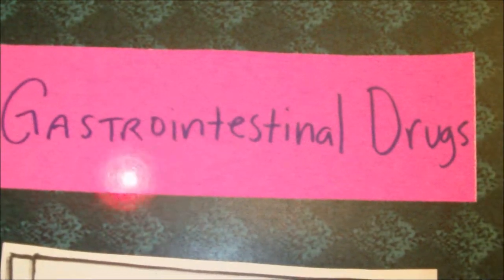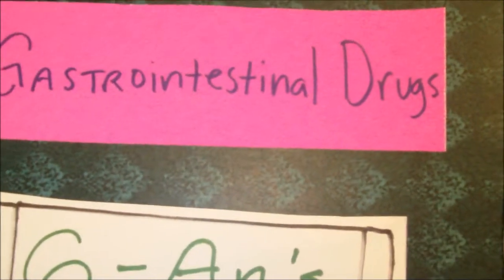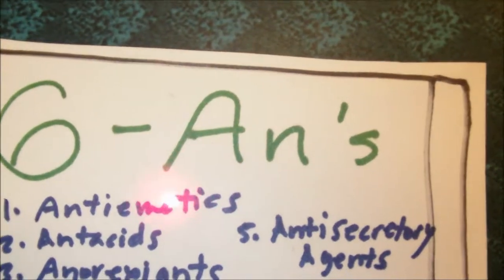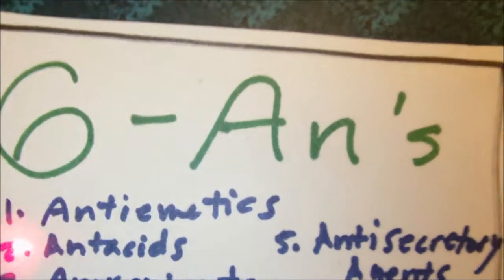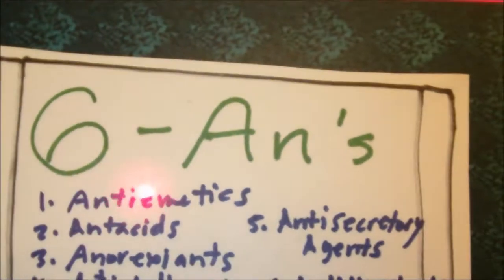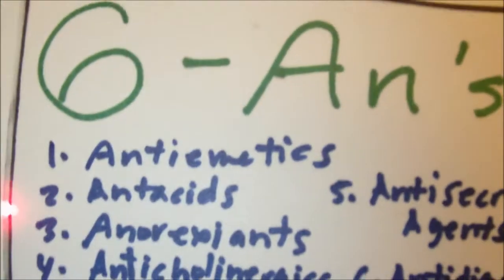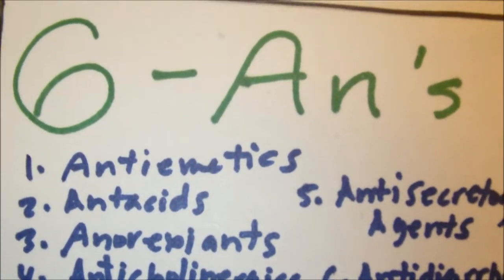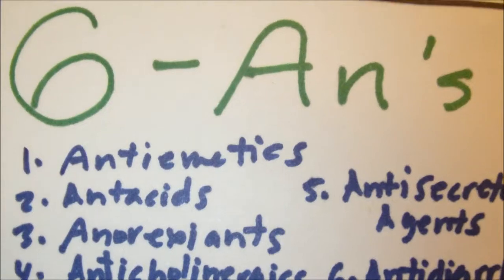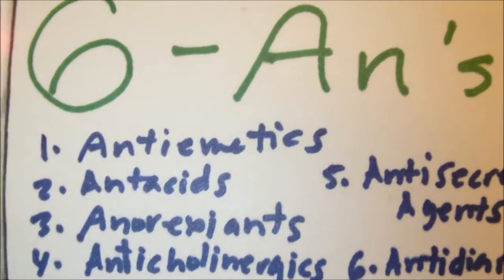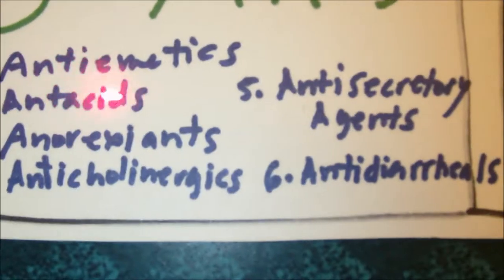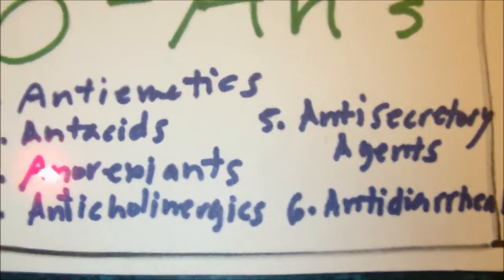With that in mind, I came up with the acronym of 6 ANs, which basically describes the first two letters — AN — of the major drugs we need to focus on in this system. Those groups of drugs include anti-emetics, antacids, anorexiants, anticholinergics, antisecretory agents, and antidiarrheals.